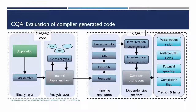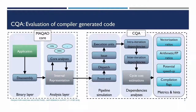How does CQA do that? The MacAO core disassembles your application. On top of that, it builds several structures: a control-flow graph and a data dependency graph. It provides an internal representation used by the module. CQA then performs pipeline simulation, specifically targeting parts known to be bottlenecks in HPC applications.